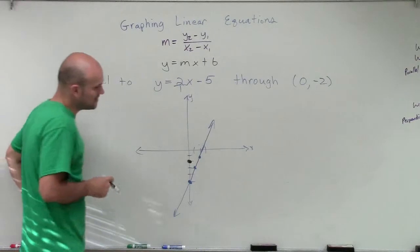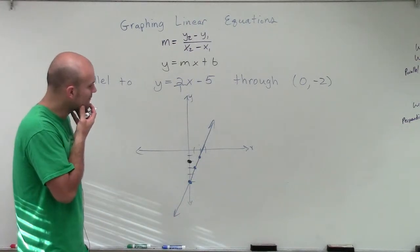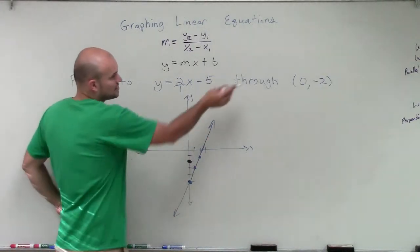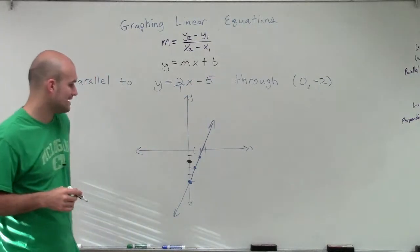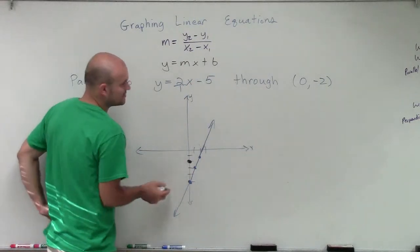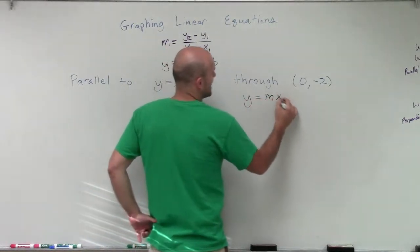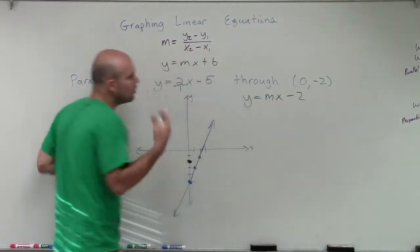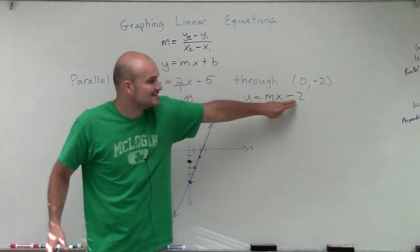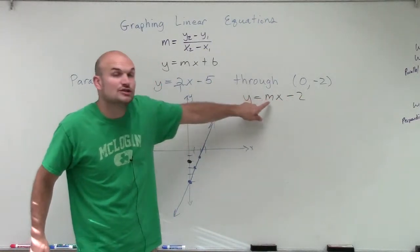But to graph this, I have the point 0, comma, negative 2. So now I know that y equals mx minus 2. My new equation is going to have a y-intercept of negative 2. Now, I just need to determine what the slope is.